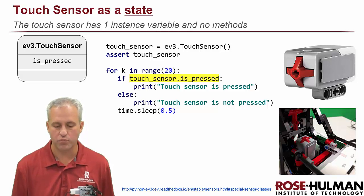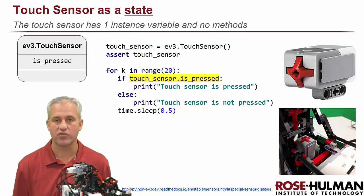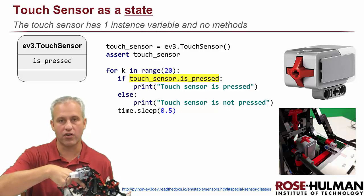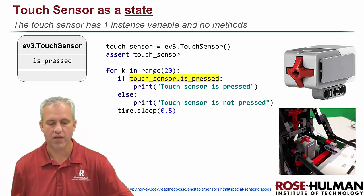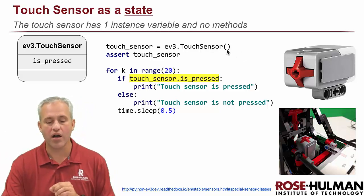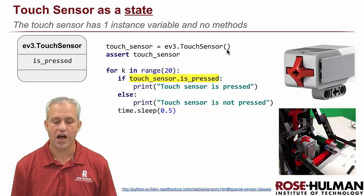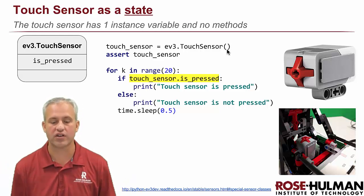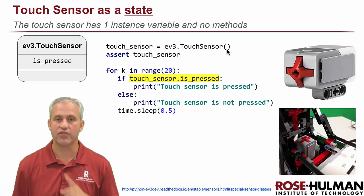You can also use it as a button. In the example it runs for 10 seconds, printing 20 messages — either 'pressed' or 'not pressed.' Just like before, we call the constructor. Unlike motors where you always had to specify where the motor was, this one will actually just try to figure it out if there's only one touch sensor connected, so you don't have to tell it where it's connected.